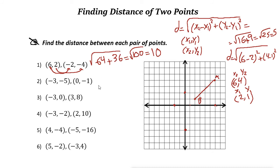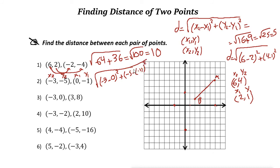Let's use the formula for this one. Let's say this one is x1, y1 and this one is x2, y2. x2 is negative 3, minus x1 which is 0, squared, plus y2 is negative 5, minus negative 1, squared. Negative 3 minus 0 is negative 3, squared is 9. Negative 5 minus negative 1 is negative 5 plus 1, which is negative 4. Squared means negative 4 times negative 4 is 16. So 9 plus 16 is 25, and the square root of 25 is 5.